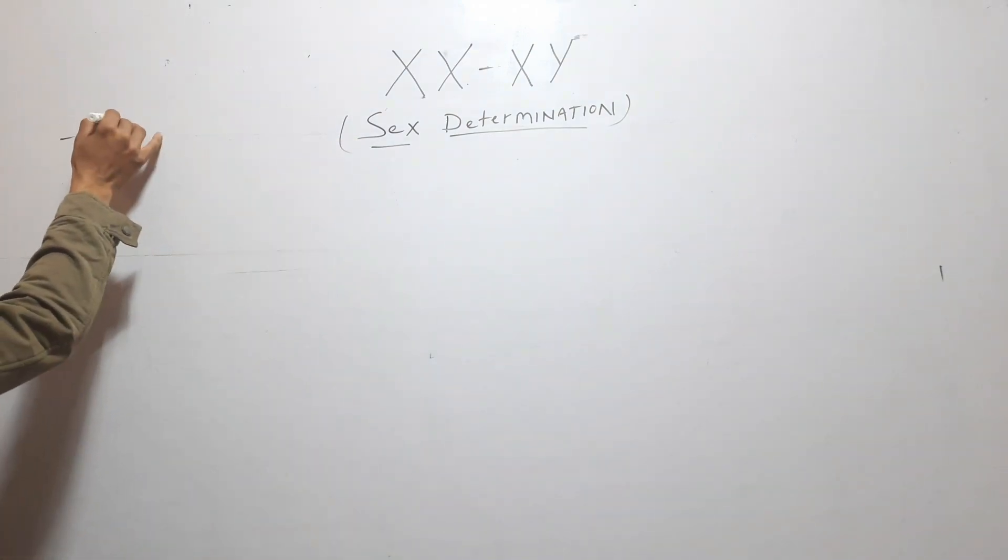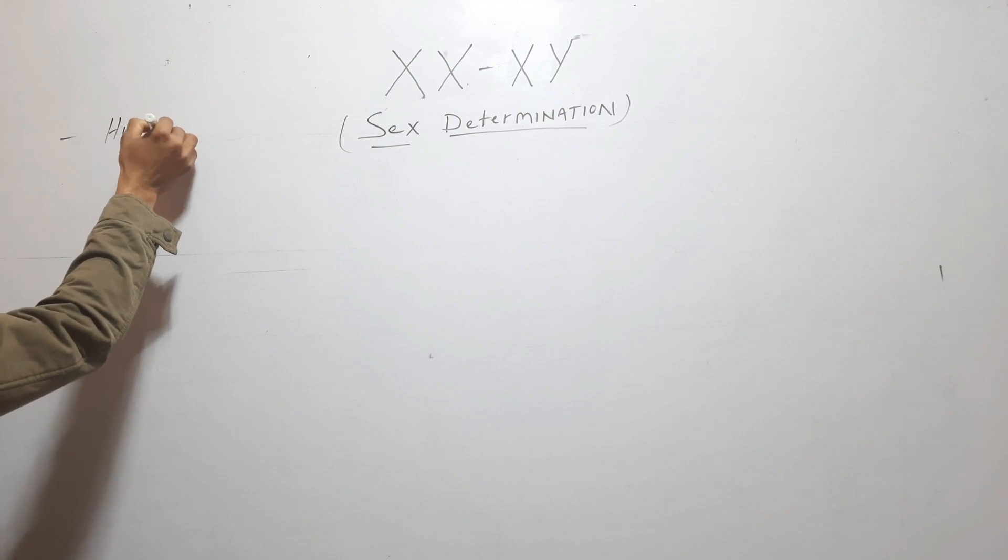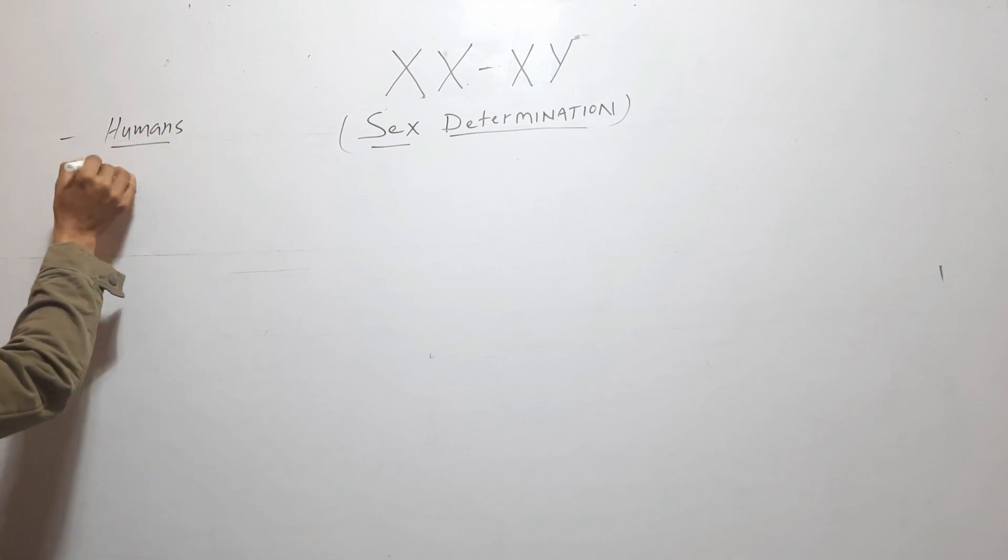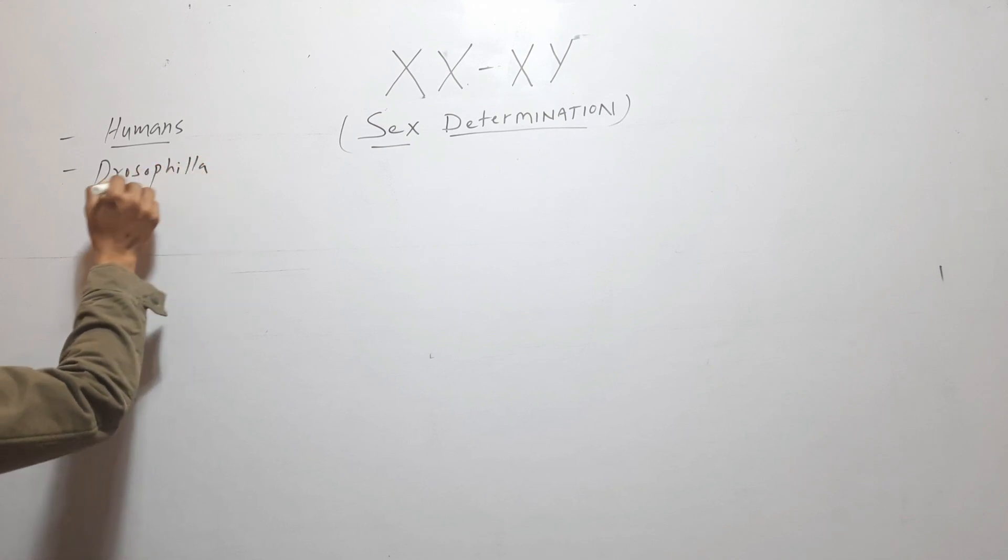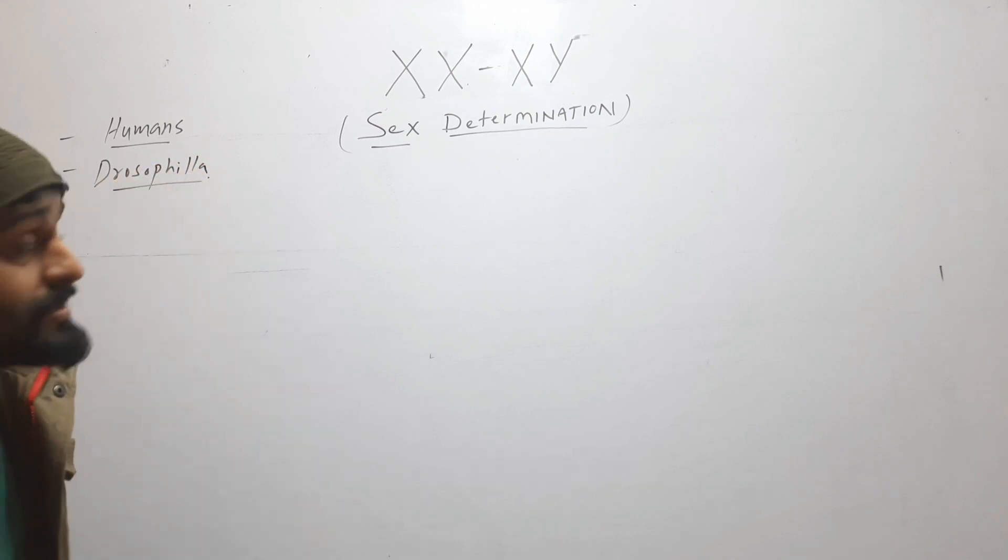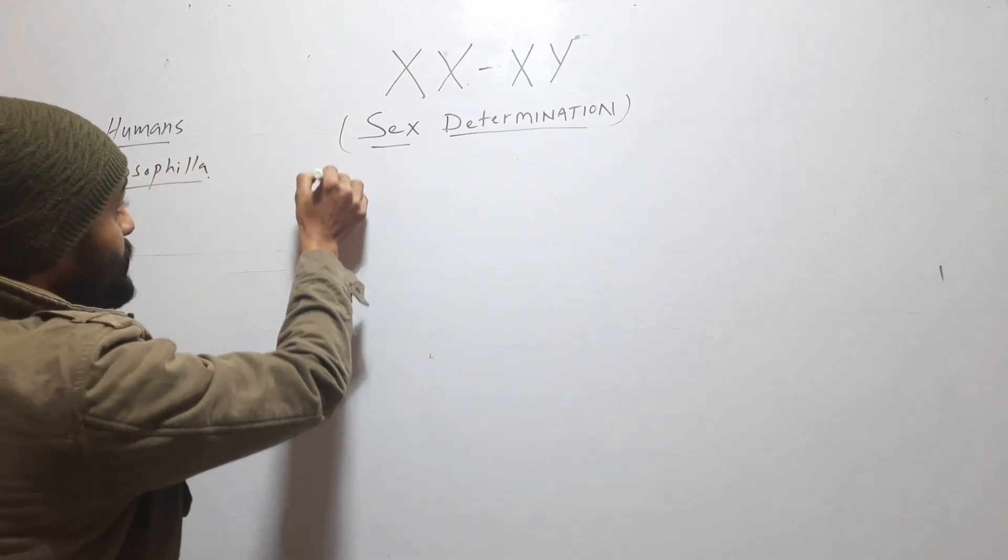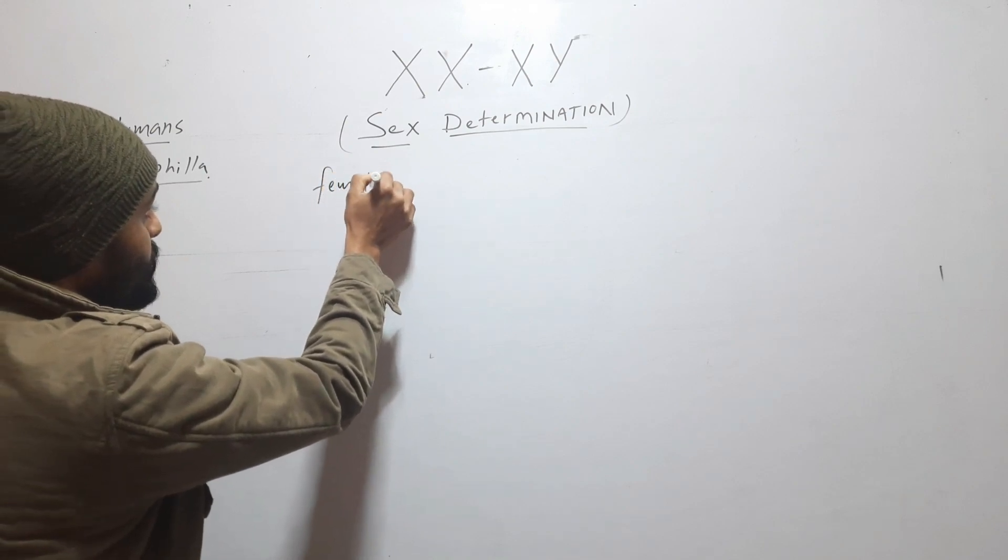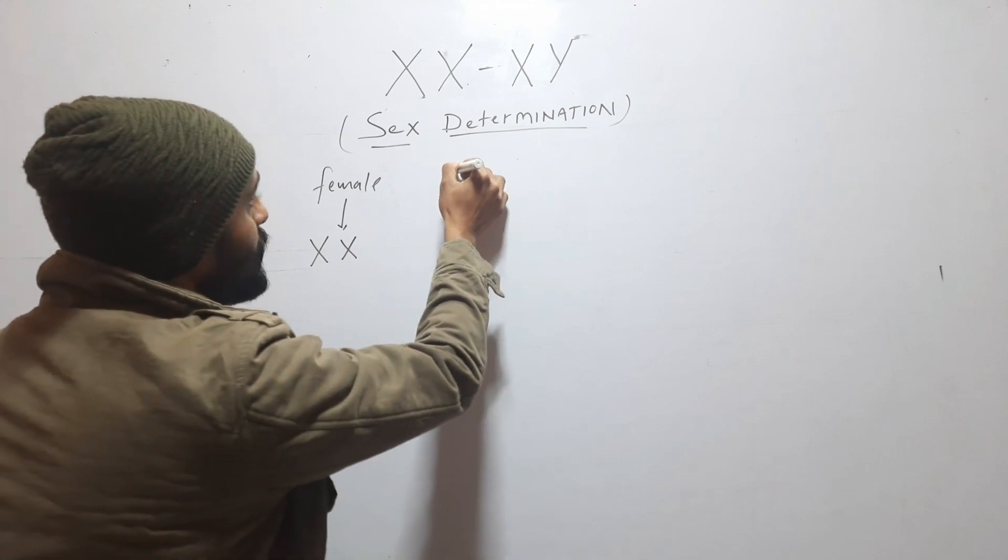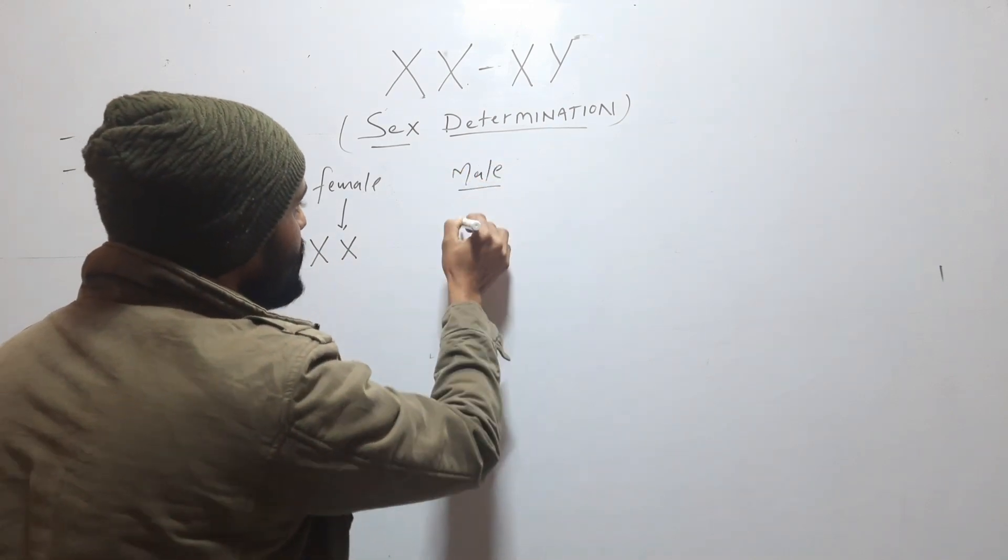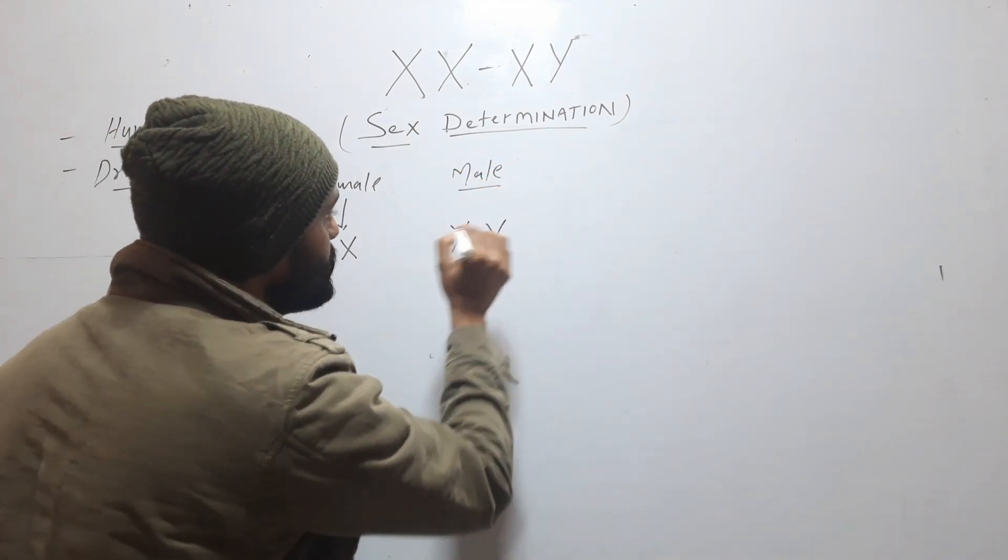This type of sex determination is found in humans and also in Drosophila. In this type of sex determination, females have two X chromosomes while males have one X and one Y chromosome.